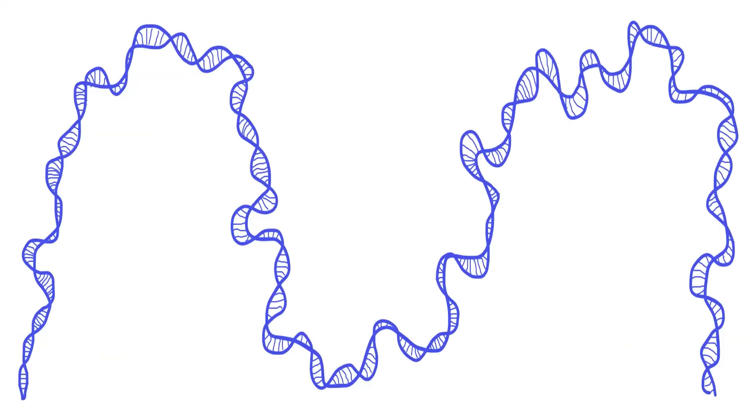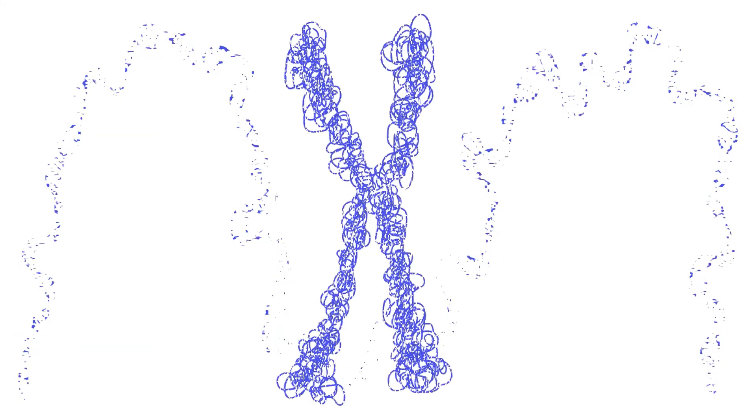When the DNA begins to coil during prophase, different genes will occupy different positions on the chromosome.